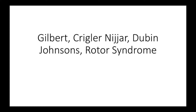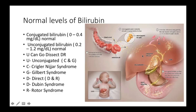So what is Gilbert's syndrome? What is Crigler-Najjar syndrome, Dubin-Johnson syndrome, and what is Rotor syndrome? But before we start, we would have to know the normal levels of bilirubin.